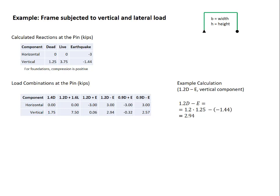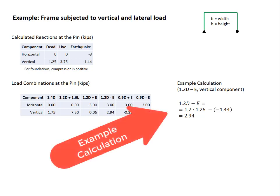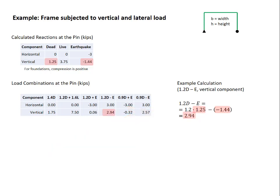So we have our expression there, 1.2 dead minus the earthquake load. 1.2 times the dead load of 1.25, subtracting the earthquake load of minus 1.44. The two negatives create a positive, and we have a resulting load of 2.94. And we would continue in this way to fill out all the remaining items in the table.